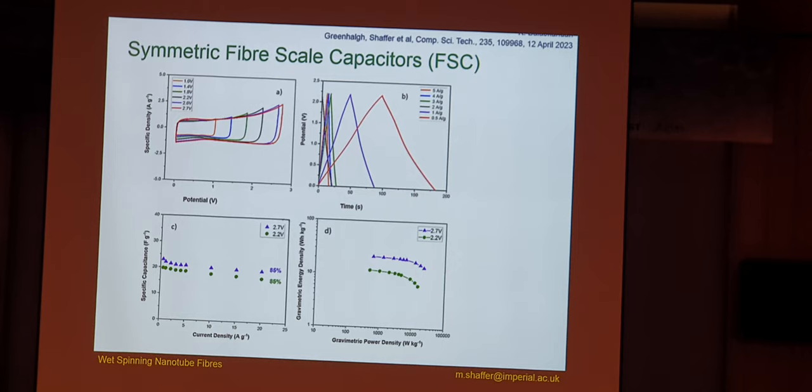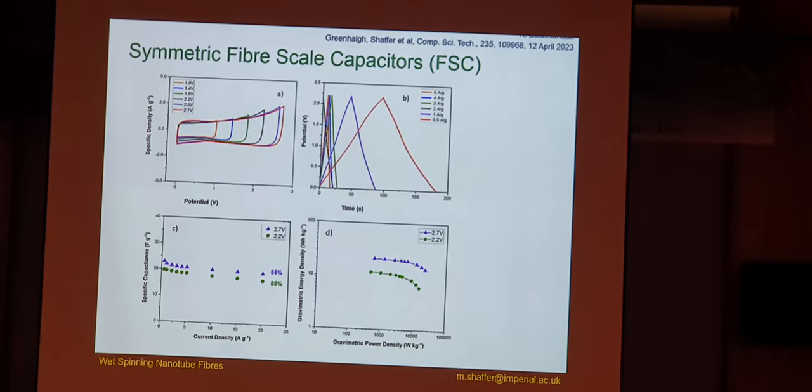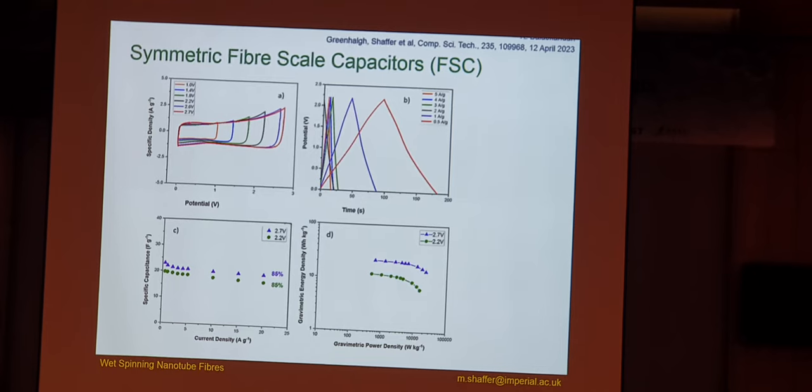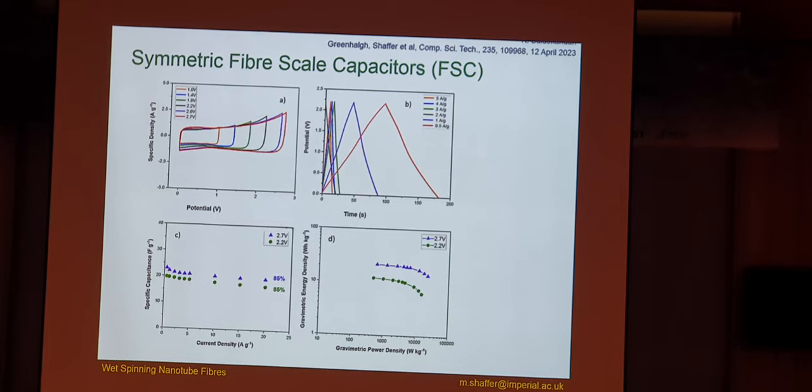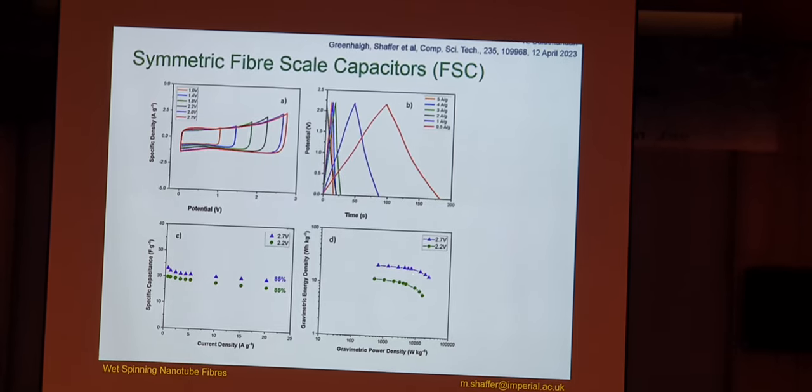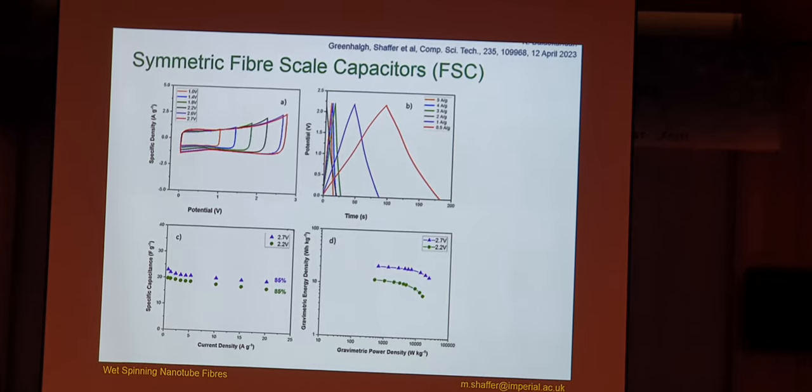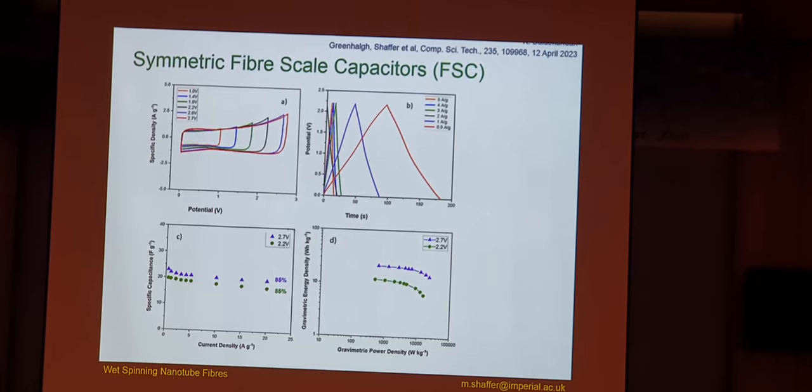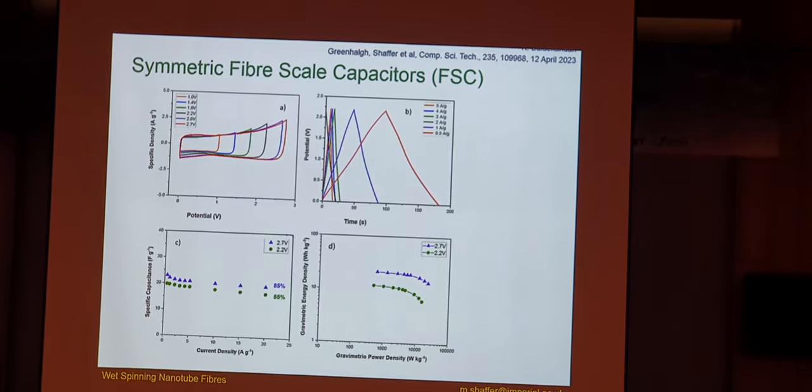You can then build these fibers into fiber-scale capacitors. This is just a symmetric electrochemical double layer system, and you see nice CV curves, reasonable discharge behavior, and very high gravimetric energy density and power density from these systems. It's quite a nice way to think about incorporating energy storage into the structure.